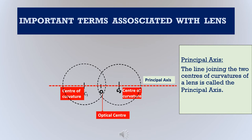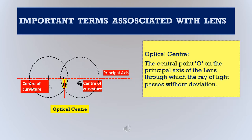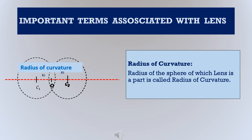The line joining the two centers of curvature of a lens is called the principal axis. The lens is a part of two spheres, and C1 and C2 are the centers of those two spheres; the line joining C1 and C2 is the principal axis. The optical center is the central point O on the principal axis through which the ray of light passes without any deviation — it is essentially the center of the lens itself. The radius of curvature is the radius of the sphere of which the lens is a part; since there are two spheres, there are two radii of curvature, represented as R1 and R2.